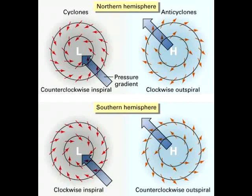The result of the three forces affecting wind directions is the cyclonic and anticyclonic flow around a low and high pressure system. In the northern hemisphere cyclones spiral counterclockwise and inward - convergence. Anticyclones spiral clockwise and outward - divergence. The directions in the southern hemisphere are opposite.